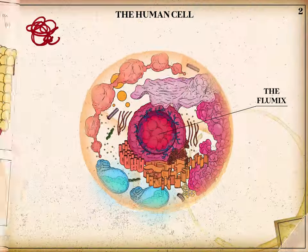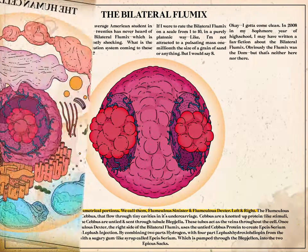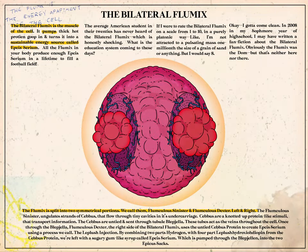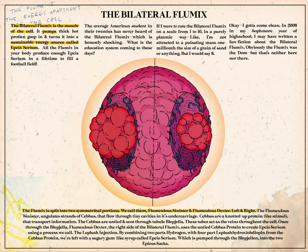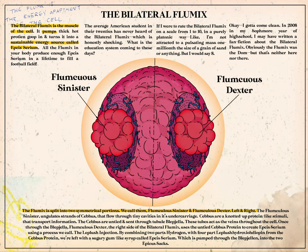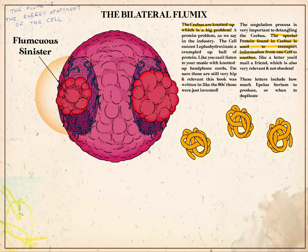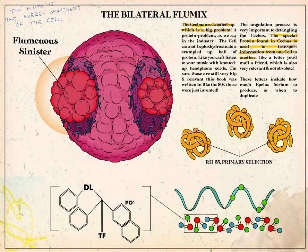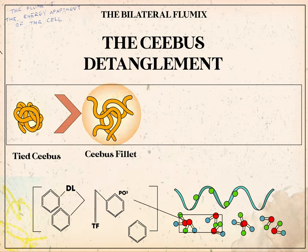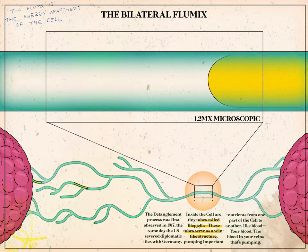Let's start with the bilateral flummox module, a perforated purple sac of organic compounds. The flummox is split into two symmetrical portions — flumquous sinister and flumquous dexter, left and right. The flumquous sinister undulates strands of cebus that flow through tiny cavities in its undercarriage. Cebus are a knotted up protein-like stimuli that transport information. The cebus are untied and sent through tubule blepgella, which act as the veins throughout the cell.